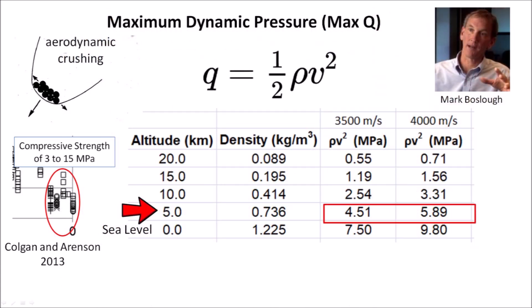Physicist Mark Boslow has argued that ice ejected by an extraterrestrial impact on an ice sheet could not have survived the aerodynamic forces of launch and re-entry through the atmosphere. However, Colgan and Ironson report that the compressive strength of glacier ice ranges from 3 to 15 MPa. This means that only the weakest ice boulders would have fragmented during re-entry, but ice boulders with compressive strength higher than 10 MPa would have survived to impact the surface and create Carolina Bays.